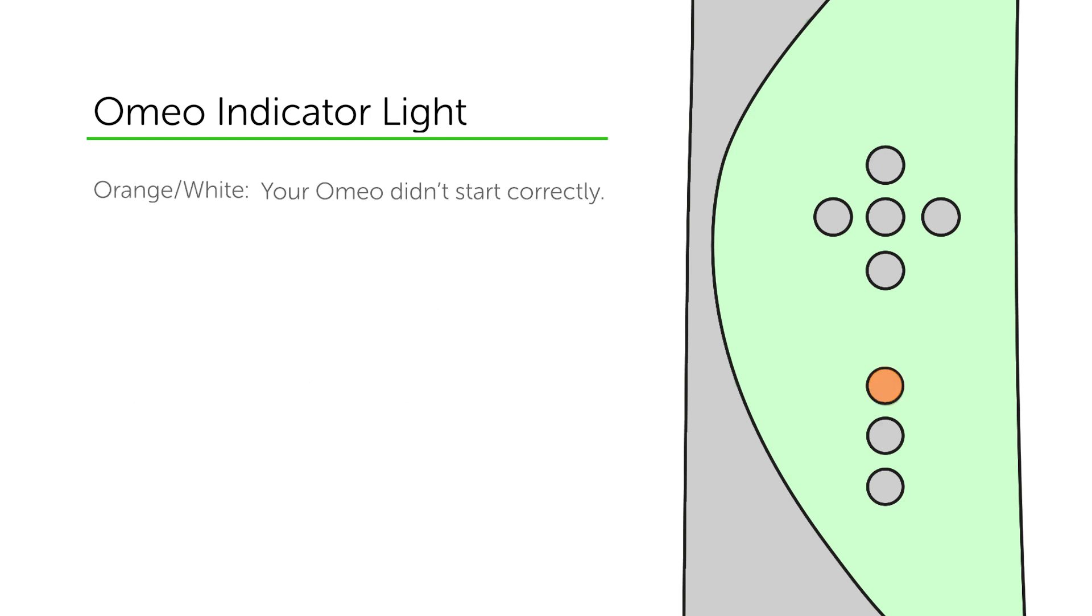When the light flashes between orange and white, this means your Omeo did not start up correctly. If the balance lights are green, it is safe to raise your Omeo's legs. If they are red, try restarting your machine.